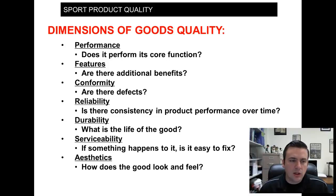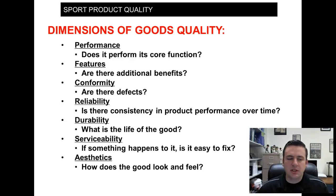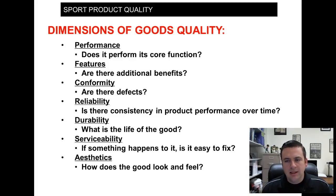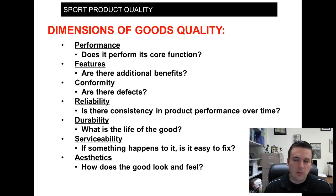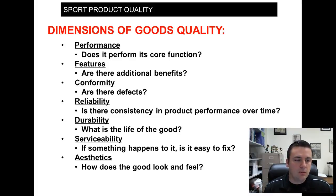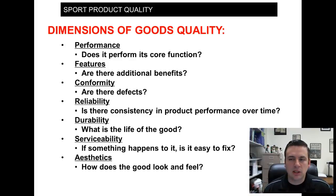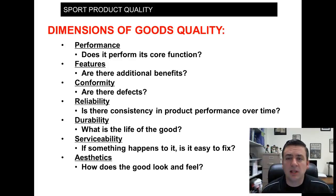The last thing is goods quality — how consumers determine whether a tangible product they're buying is of high quality. If consumers perceive high quality, they're more likely to reuse and recommend that product. The dimensions include: Performance — does it perform its core function? For example, a trail running shoe should withstand constant contact with rocks and the elements. Features — are there additional features? In sporting goods especially, technology and innovation are bringing new benefits along with products.